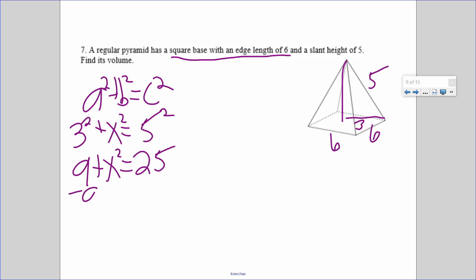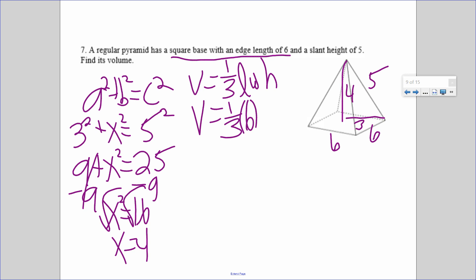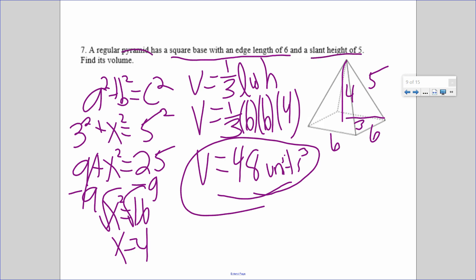So, let's see. From the reference sheet one third length times width times height. The length and the width are both six, the height is four. I can use my calculator. Your answer should be 48 units cubed. All right, so again if they give you slant height for a cone or a pyramid, you're gonna have to use Pythagorean theorem to find the height. They've been doing that a lot lately on the regents.